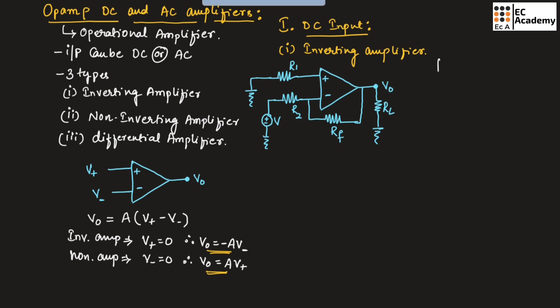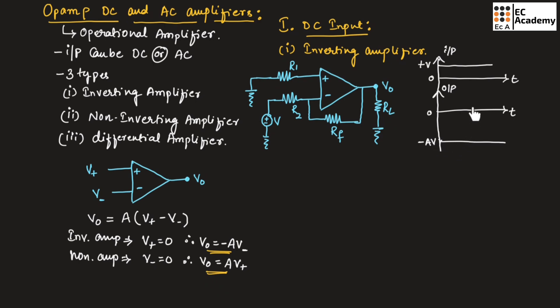Let us consider the input and output waveform. This is the DC signal at the input. Since the input is connected to the inverting terminal, the output is inverted as well as amplified. The output voltage will be equal to minus A·V since we are using the inverting amplifier.